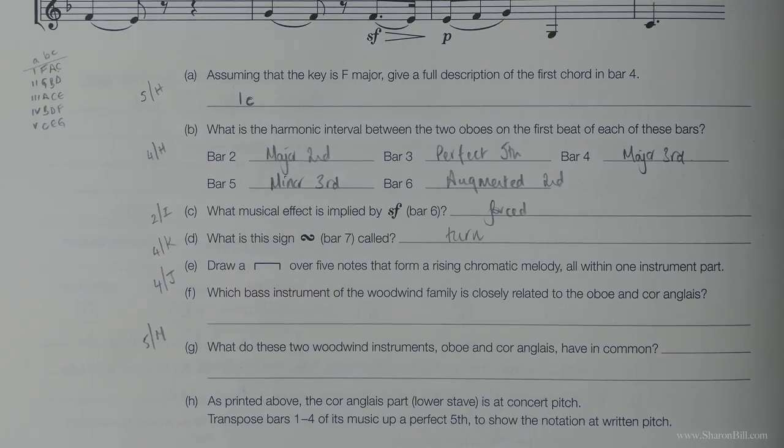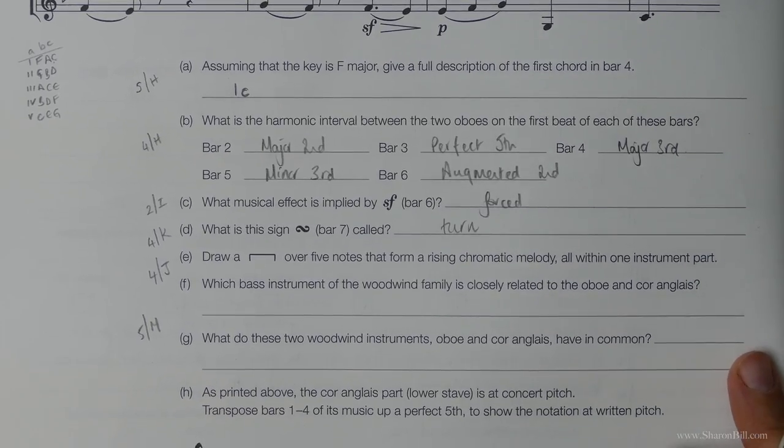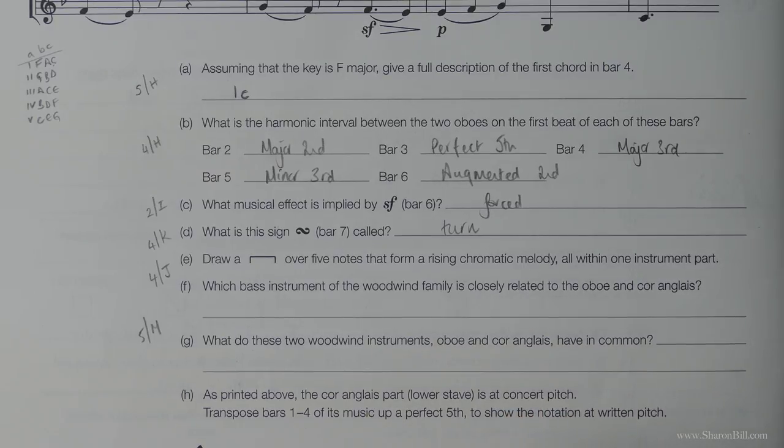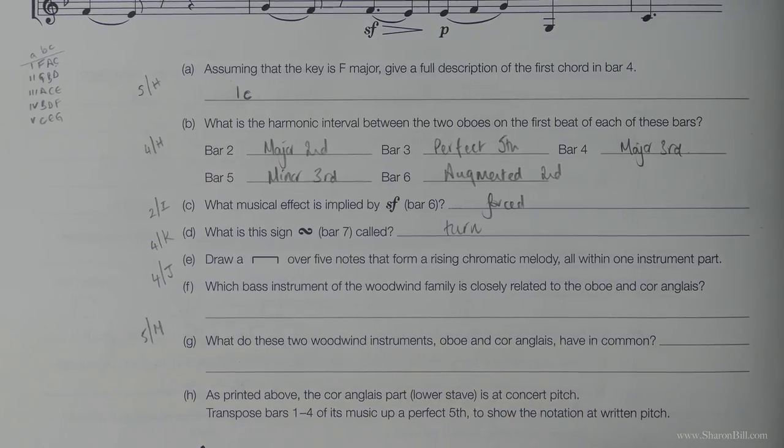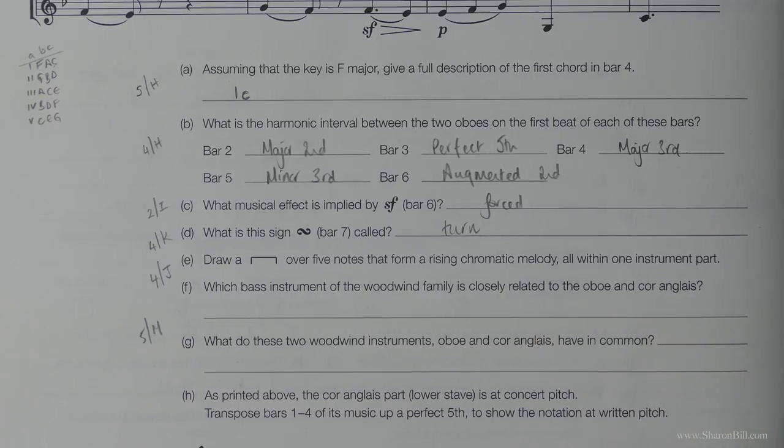Let's have a look at the next bit. So this is where just a bit of general knowledge sort of is required. And it can't be sort of revised all at once. It's just you have to pick these bits up as you go along. So the bassoon is closely related to the oboe or the corps anglais. I suppose you could say double bassoon.